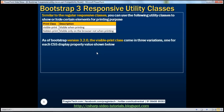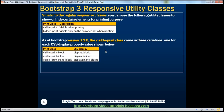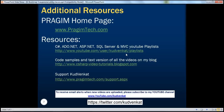As of Bootstrap version 3.2.0, the visible-print class also comes in three variations — one for each CSS display property value: 'visible-print-block', 'visible-print-inline', and 'visible-print-inline-block'. The 'visible-print' class exists but is deprecated as of Bootstrap version 3.2.0. Thank you for listening and have a great day.